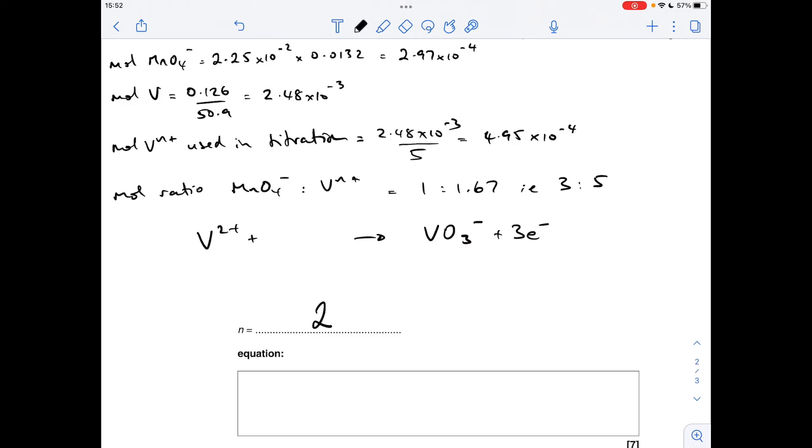We know that if we've got three O's on this side, we need three H₂O's on the left-hand side. So all we need to do now is balance the hydrogens. So we've got six H's, so we must have six H⁺. So that's the half equation for the vanadium half of the process. There's the other half equation that was given in the question. So let's just remind ourselves of the ratio.